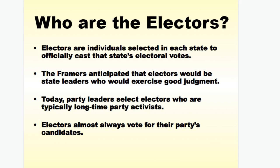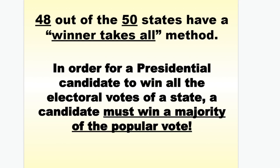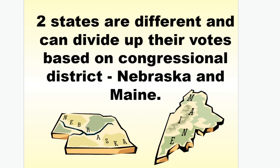The electors are individuals selected in each state to officially cast the state's electoral votes. The framers anticipated that electors would be state leaders who exercise good judgment. Today, party leaders select electors who are typically lifelong party activists, and electors almost always vote for their party's candidates. There have been 58 times in history where an elector did not vote the way their state cast it. 48 of our 50 states have a winner-take-all method, meaning the candidate must win 50% plus one vote to take all the delegates from the state. Two states — Nebraska and Maine — divide their votes based on congressional districts.